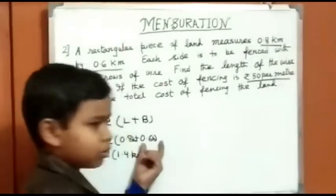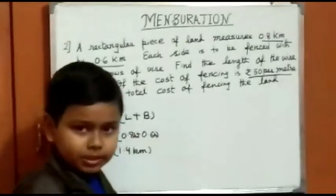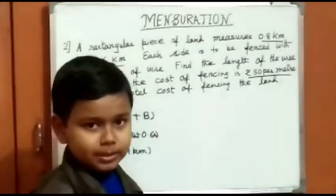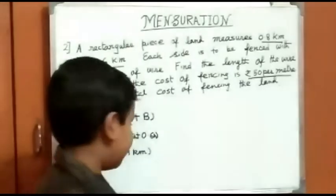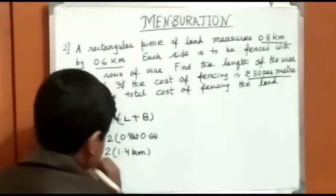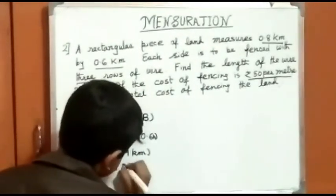Make sure that you don't write that 0.8 and 0.6 is 0.14 km. It is 1.4 km. So 1.4 multiplied by 2 is 2.8 km.